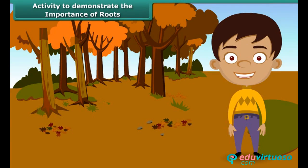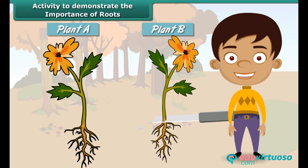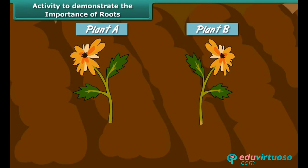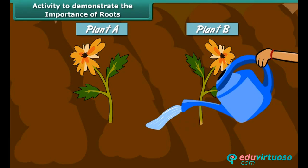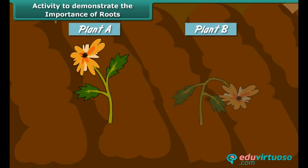Let us perform an activity to demonstrate the importance of roots. Take two plants, A and B. Cut off the roots of plant B. Plant both in the soil and water them every day. After a few days, plant A appears as healthy as on the first day, whereas plant B appears wilted. This proves that roots absorb water and minerals from the soil and transport them to the other parts of the plant.